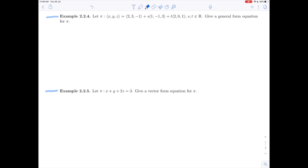So let's go ahead and start with example 2.2.4 and we're told that we have a plane π which is given in vector form xyz equals (2, 3, -1) plus s times (1, -1, 3) plus t times (2, 0, 1) for s and t in R, and we're asked to give a general form equation for the plane out of this vector form equation. So the first thing we might do is remind ourselves what the general form equation looks like: ax plus by plus cz plus d equals 0, and then let's take stock of what we have and what we need.